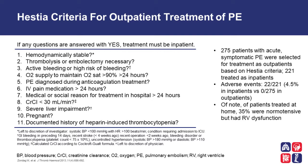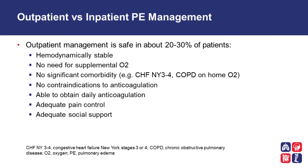Of note, 35% of patients treated at home had normal blood pressure but did have RV dysfunction on their echo. This suggests that treating certain PE patients at home can be done in a safe and efficacious manner. Outpatient management of pulmonary embolism is safe in about 20 to 30% of patients — those who are hemodynamically stable, have no need for supplemental oxygen, have no significant comorbidities, have no contraindications to anticoagulation, are able to obtain daily anticoagulation, and have adequate pain control and social support.